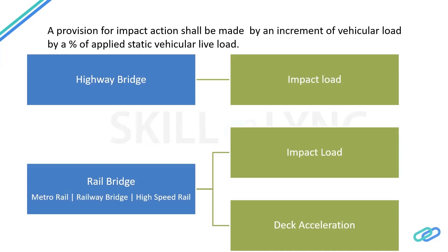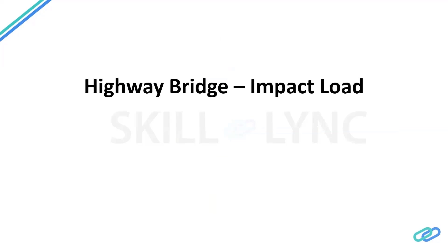For railway bridges, there is an additional component beyond impact load: deck acceleration. The rail track runs over the bridge, and as the train moves it is subjected to vibrations. The deck vibration must be limited because passengers inside should have a comfortable journey. The code specifies a limit on deck acceleration to ensure passenger comfort. Additionally, since the rail runs on a track, the deck must not accelerate excessively or the train may dislodge from the track.